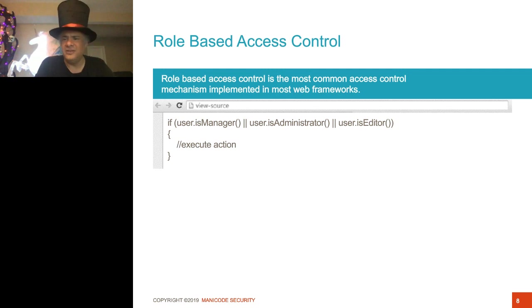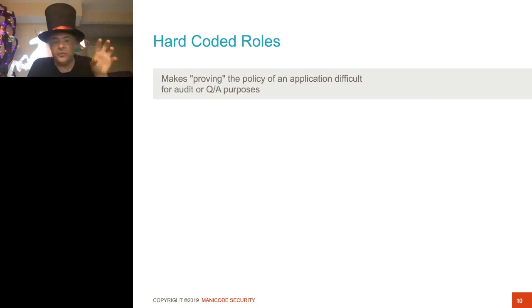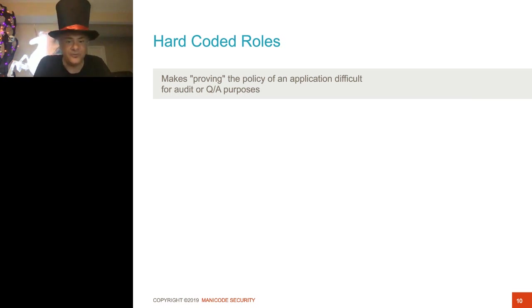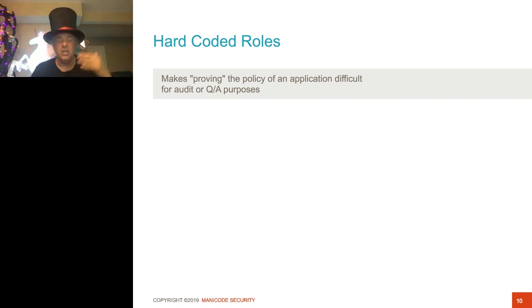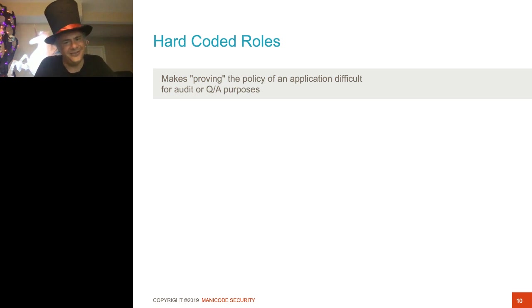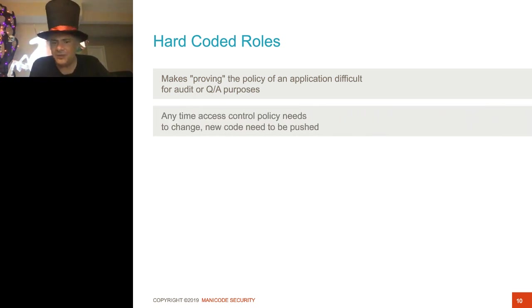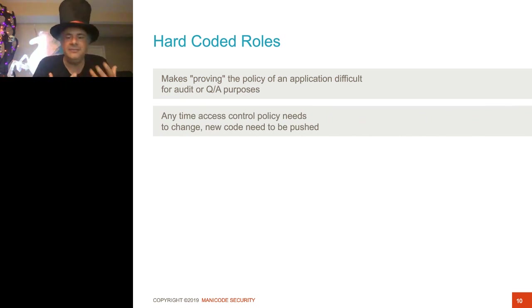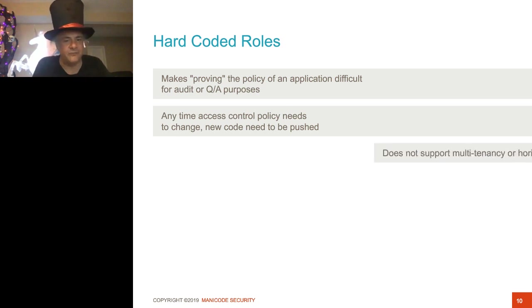Let's go into a few more things that go wrong with role-based access control. First, it makes the proving of software difficult for auditing or QA purposes. I have to literally dig through millions of lines of code, looking for all the role checks to deduce your policy — it's a non-starter at best. Two: anytime I have to change policy, I need to be pushing code, and that limits the flexibility I have with driving policy in a piece of software.